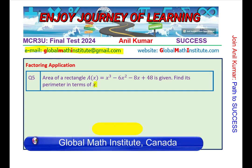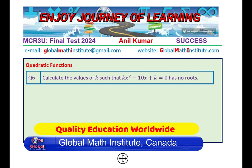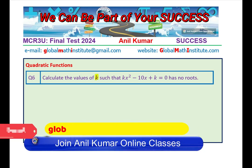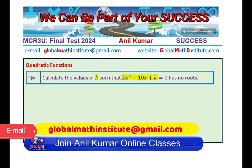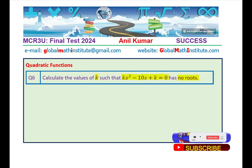Let's move on and take up the next one, which is question number 6. Calculate the value of k such that kx² - 10x + k = 0 has no real roots. You need to find the value of k. This is moving on to the next unit on quadratic functions.